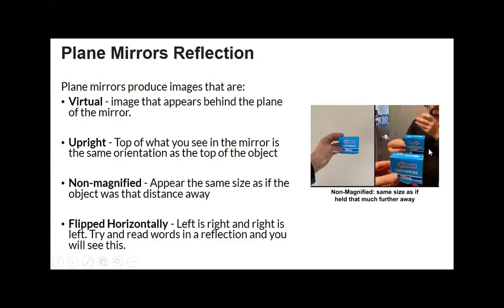And then flip horizontally — if you look at the image, you see the way that the words are written. That's part of the reason I had this toothpick box with words on it — you can see it's just flipped the other way, flipped horizontally. So those are the reflections off plane mirrors. All virtual images are upright — write that down somewhere on your paper, because that's going to save you when it comes to lenses too. If it's upright, it's virtual.